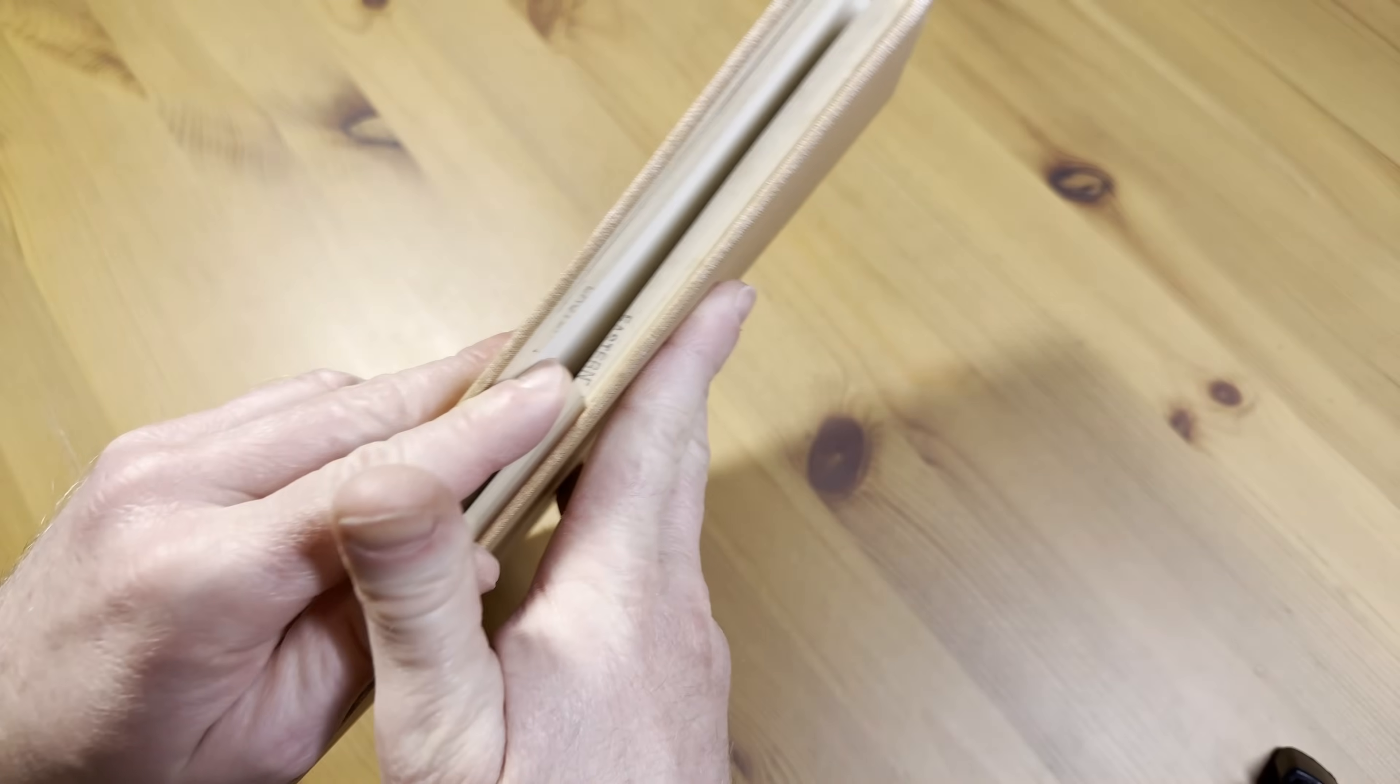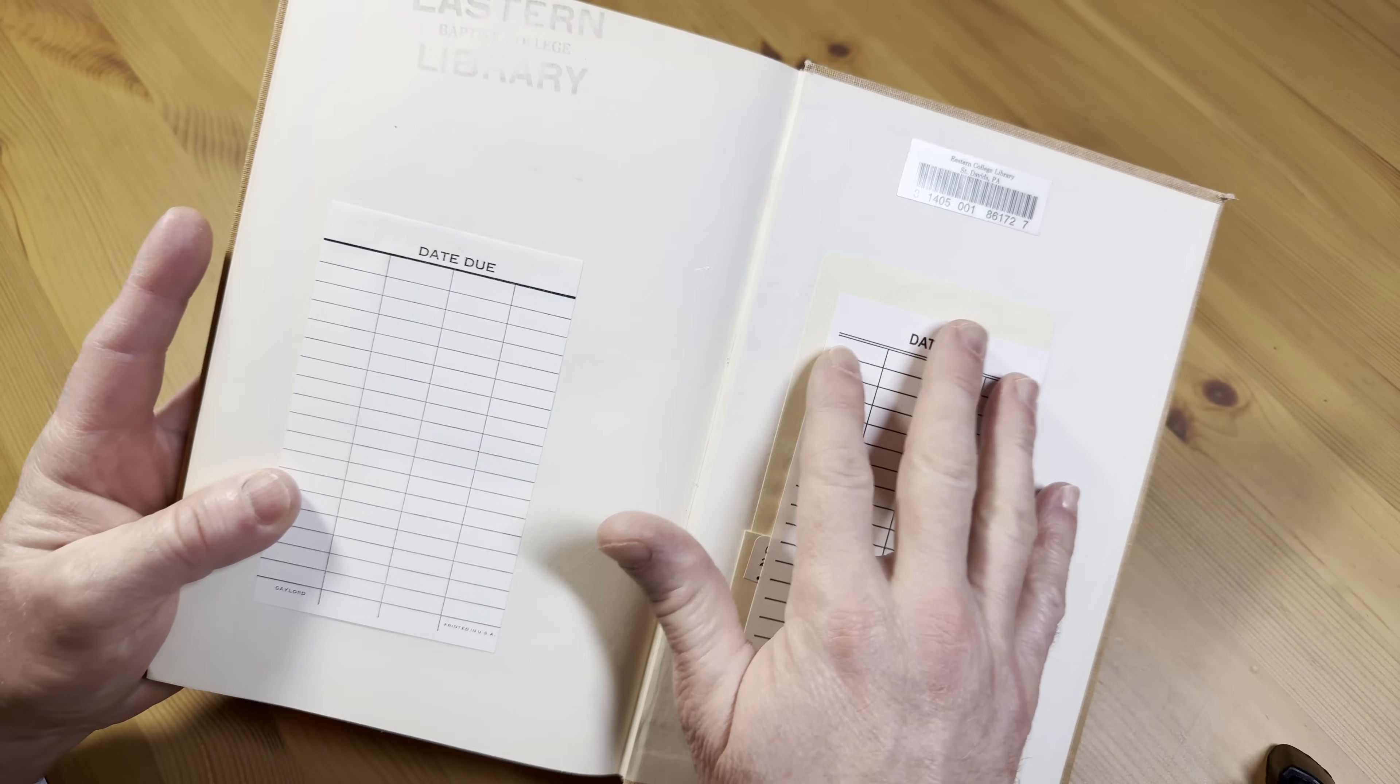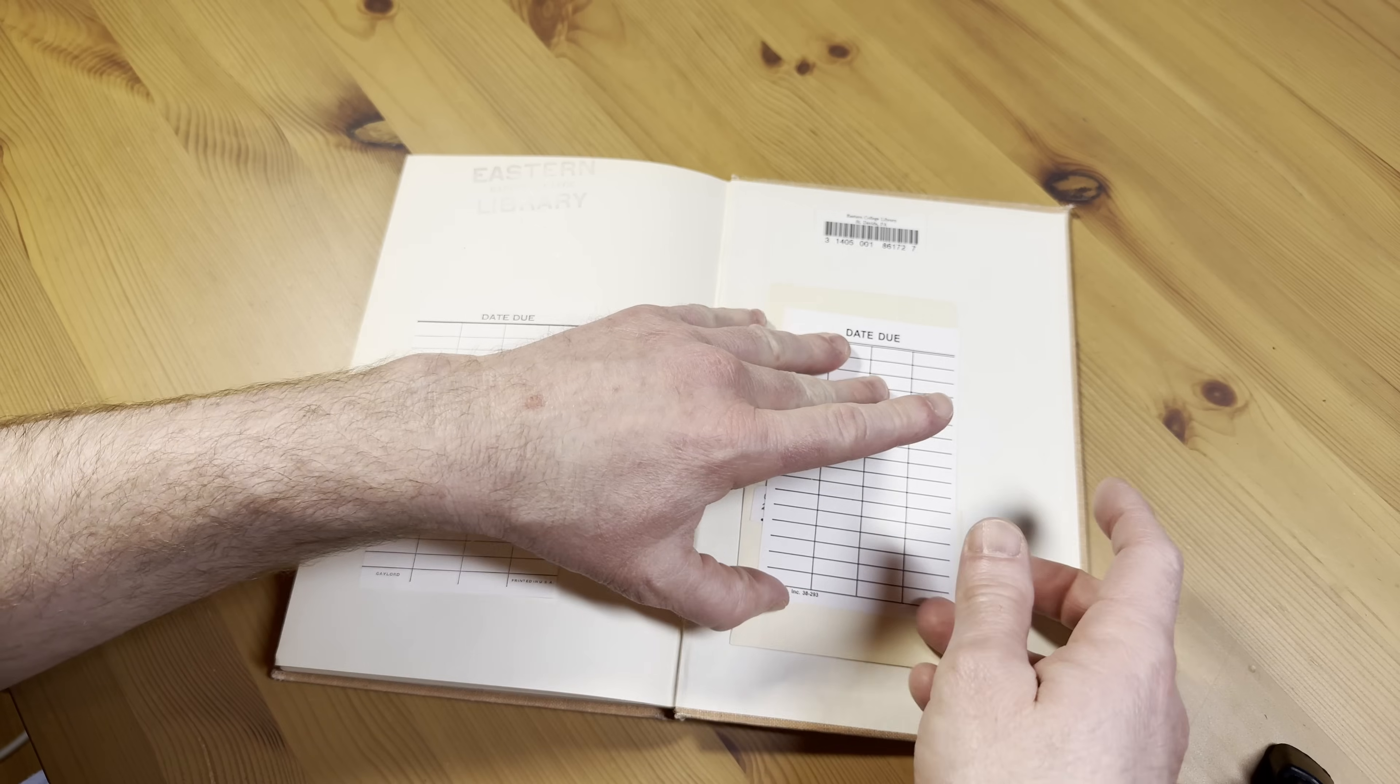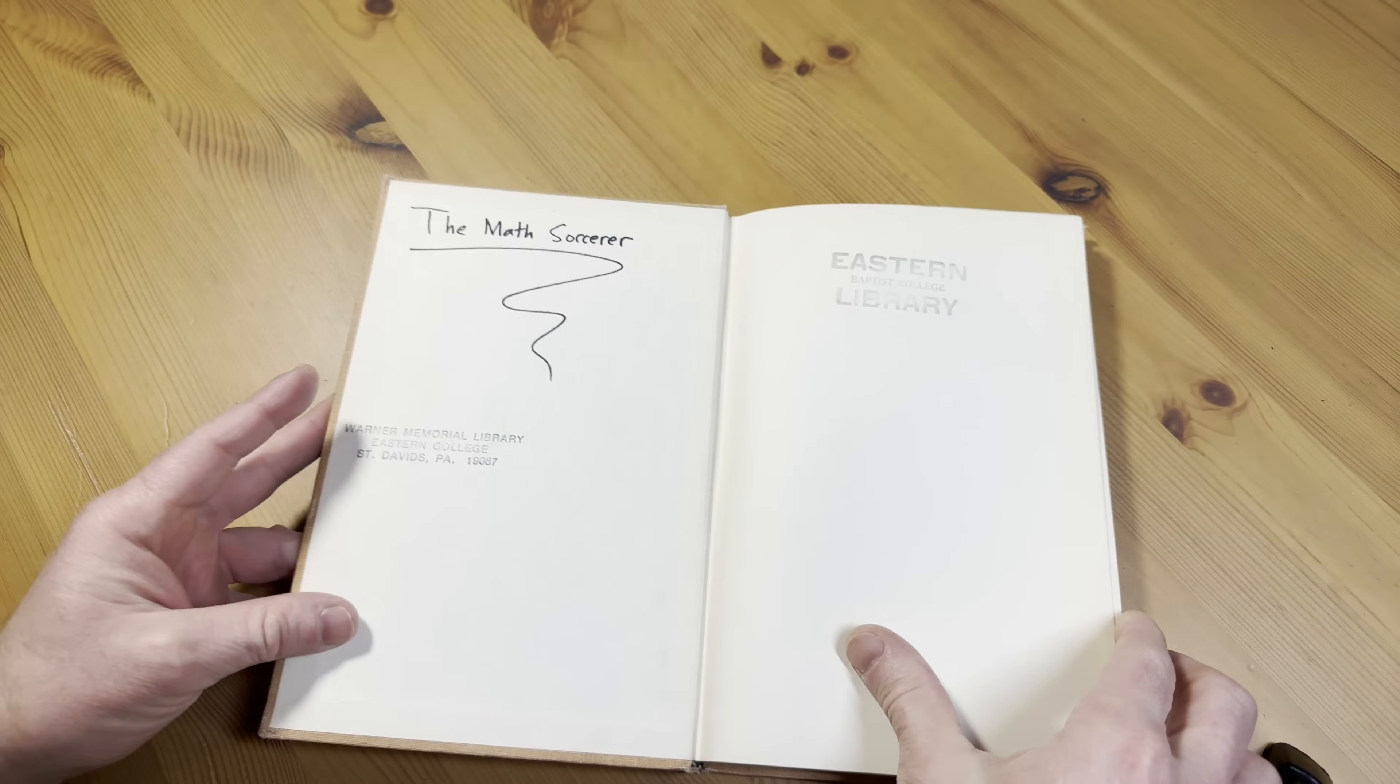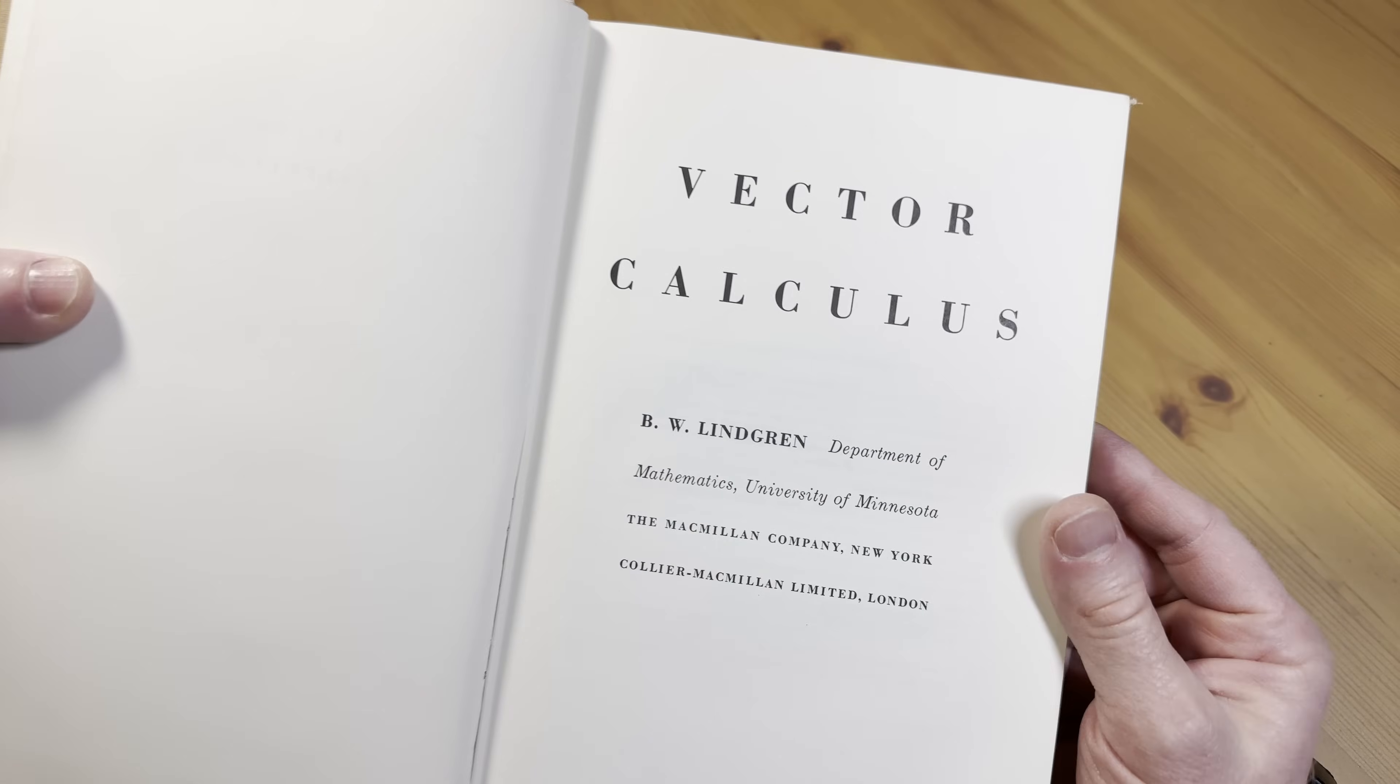It smells amazing. This is an ex-library book because it used to belong to the Eastern College Library in St. David's Pennsylvania. Pretty cool. Let's open it up and take a look inside this masterpiece Vector Calculus.